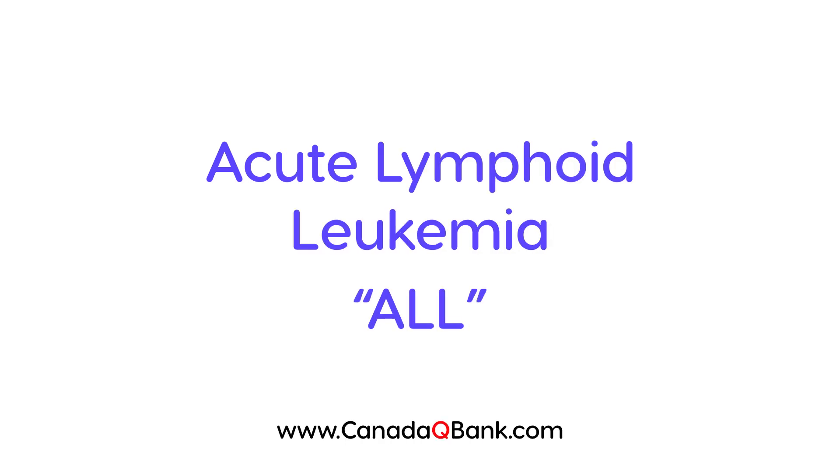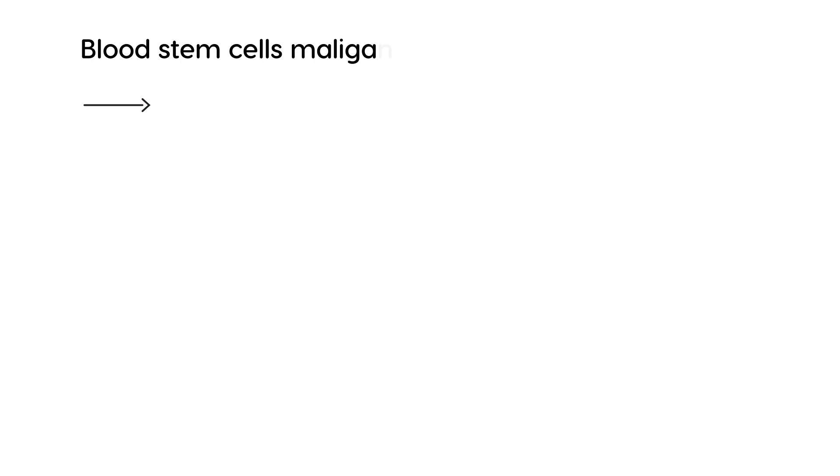In this video, I'm going to talk about acute lymphoid leukemia, also known as ALL. ALL is basically a condition when the normal blood cells undergo a malignant transformation into cells that are essentially unable to mature into blood cells. When you have this malignant transformation, there becomes a very large number of cells that are undifferentiated.